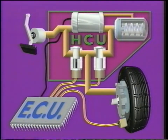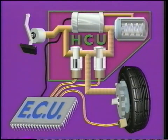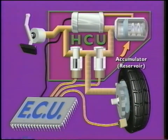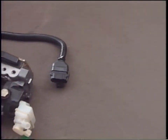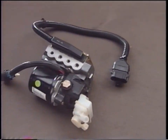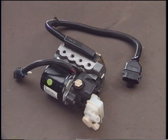Typically, some Anti-Lock Brake Systems temporarily store brake fluid which has been bled from the hydraulic system in an accumulator, until it can be returned to the master cylinder. ABS uses at least one electric pump and motor to maintain hydraulic pressure during operation. The pump and motor are typically part of the HCU.